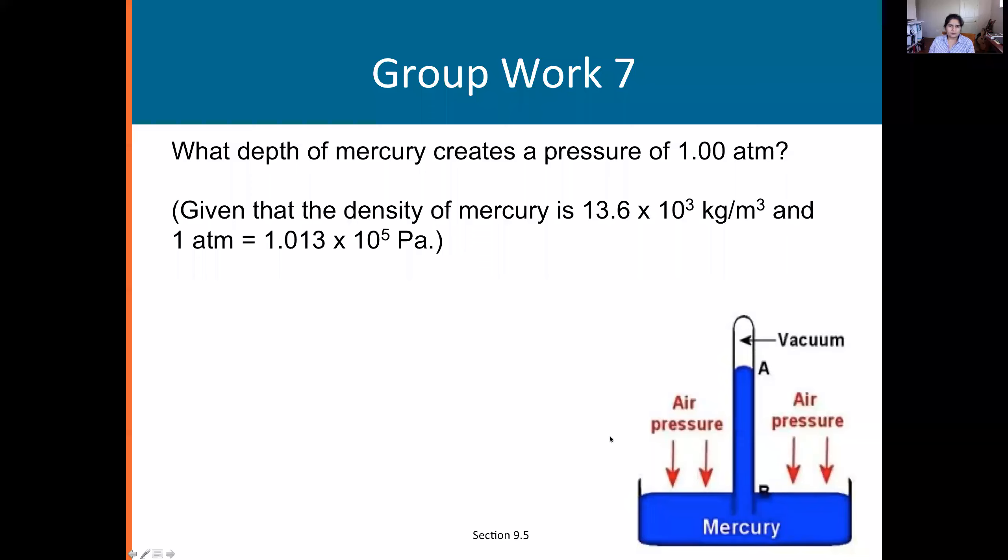What depth of mercury creates a pressure of one atmosphere? Here's a tub of mercury and an inverted closed test tube. This entire system is in equilibrium. Out here we know we must have one atmosphere of pressure. Let's write that: on this surface we have one atmosphere of pressure.